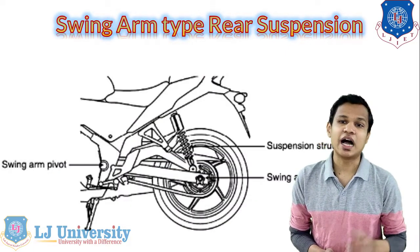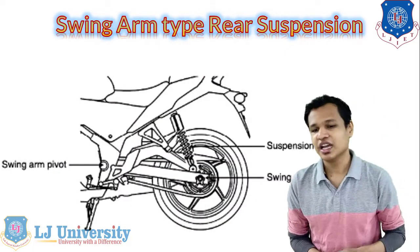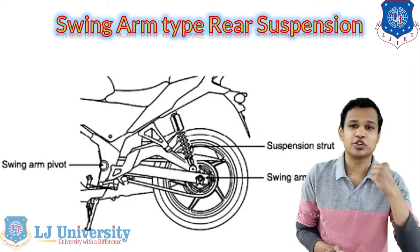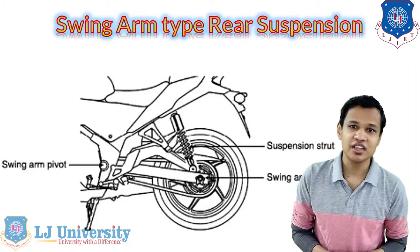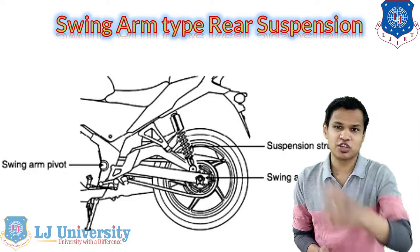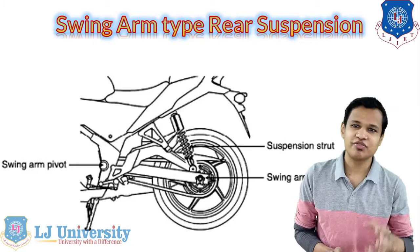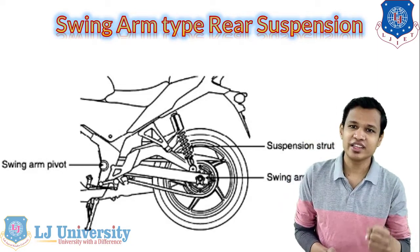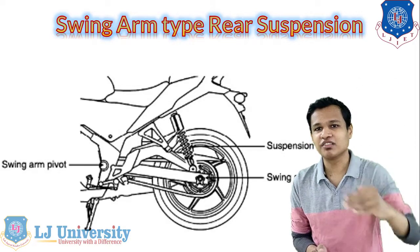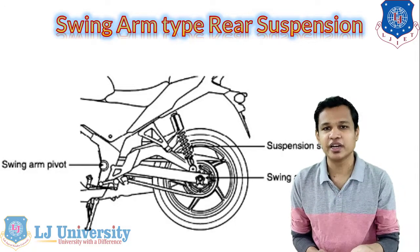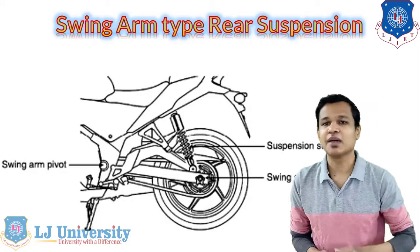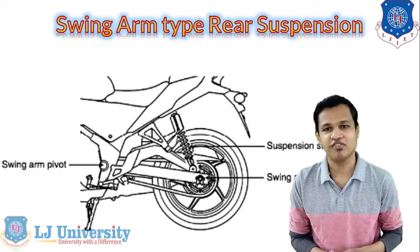The second type is the swing arm type rear suspension, which is very widely used in two wheelers and motorcycles. In this system, the spring and shock absorber assembly is attached with the swing arm, and one swing arm pivot is connected with the frame. Whenever the rear wheel goes up and down, the suspension system goes up and down with it. You might have seen this type of suspension system on motorcycles — it is very widely used.